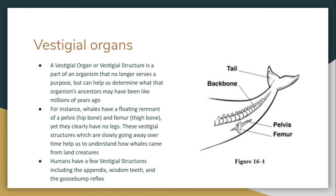The goosebump reflex is another vestigial structure. Essentially, if you see an animal that's cold and it pops up its fur, that's what your goosebump reflex is trying to do. When you get cold, it's trying to puff up your fur to keep you warm. Or if you get scared — like a cat puffing up its fur to look bigger — the same thing happens with humans: goosebumps pop up, it's your body going 'make our fur bigger so that we're scarier.' Not very useful when you have tiny human hair, but that's why it's vestigial — it's a leftover.